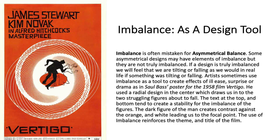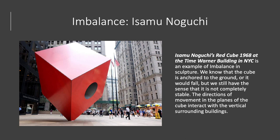Imbalance is often used as a design technique by artists. It's not the same as asymmetrical balance, but it's often confused for that. When you have true imbalance, you're going to feel that things are tilting. In the Vertigo poster for the 1950s film by Saul Bass, we have the figures in the center in a spiral and they're falling — and you feel that things are falling, which adds to the theme and title of the film. This sculpture by Isamu Noguchi is another example of imbalance in art — it's anchored to the ground, but it feels like it could fall, creating a whole feeling of imbalance.